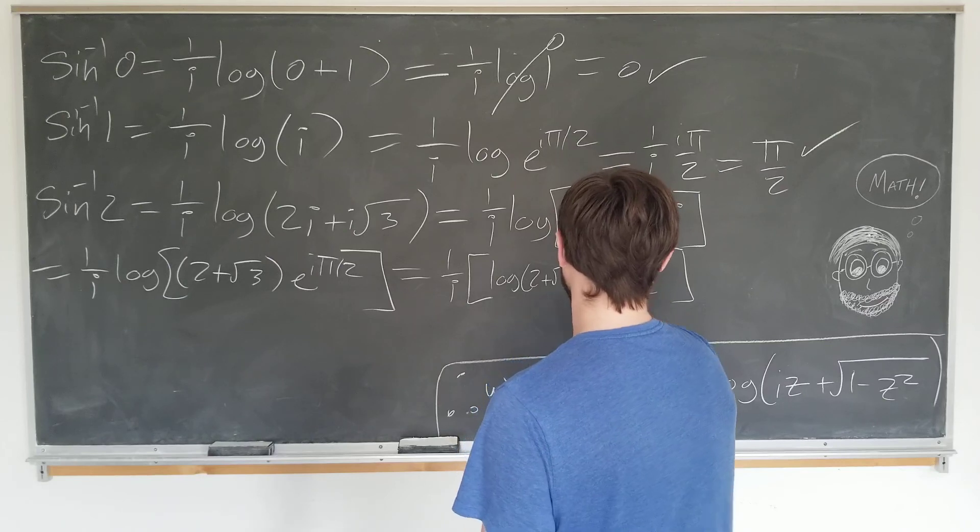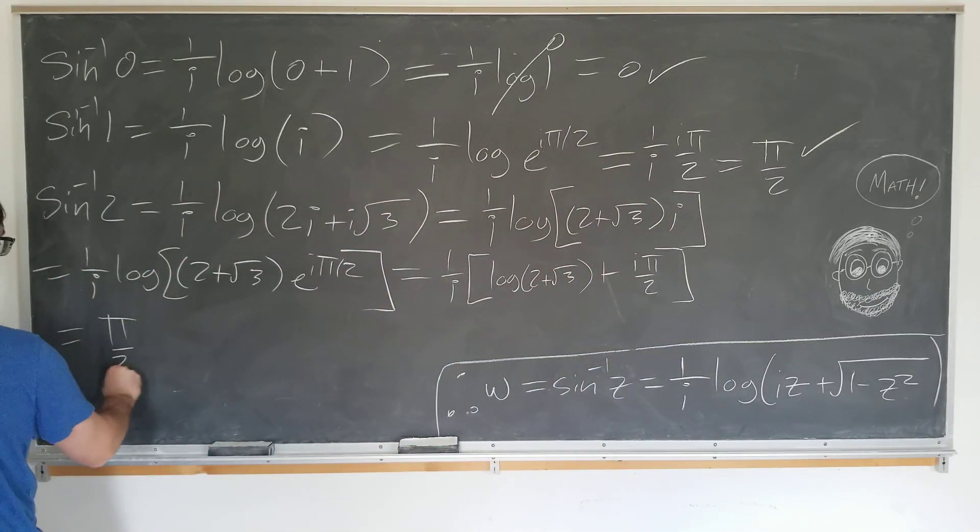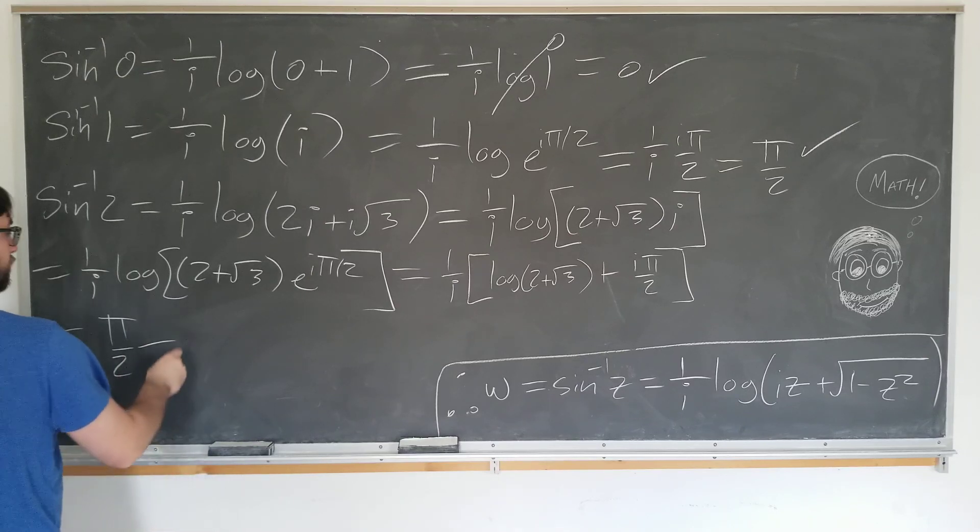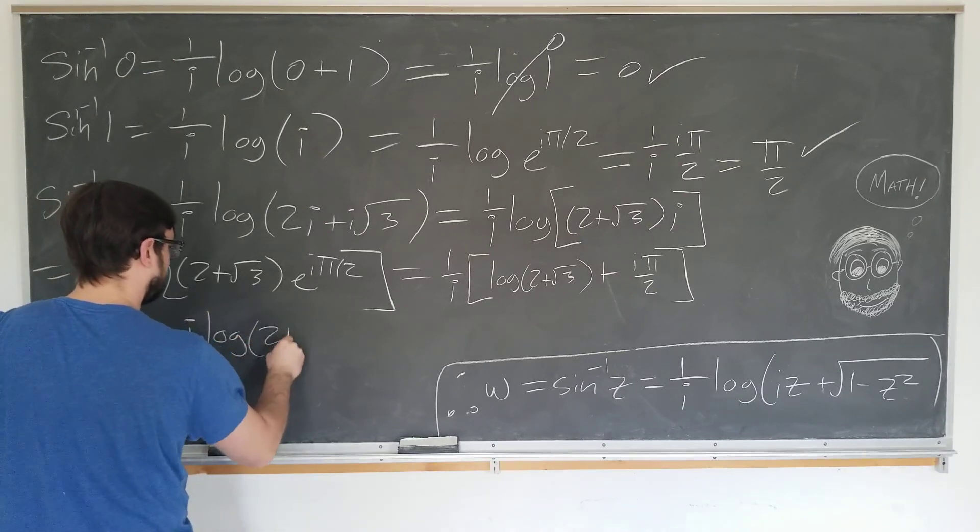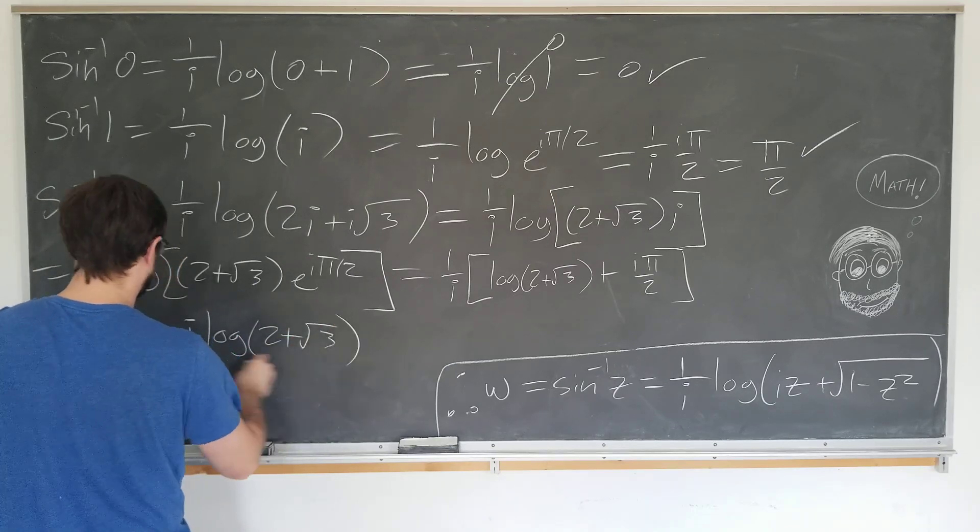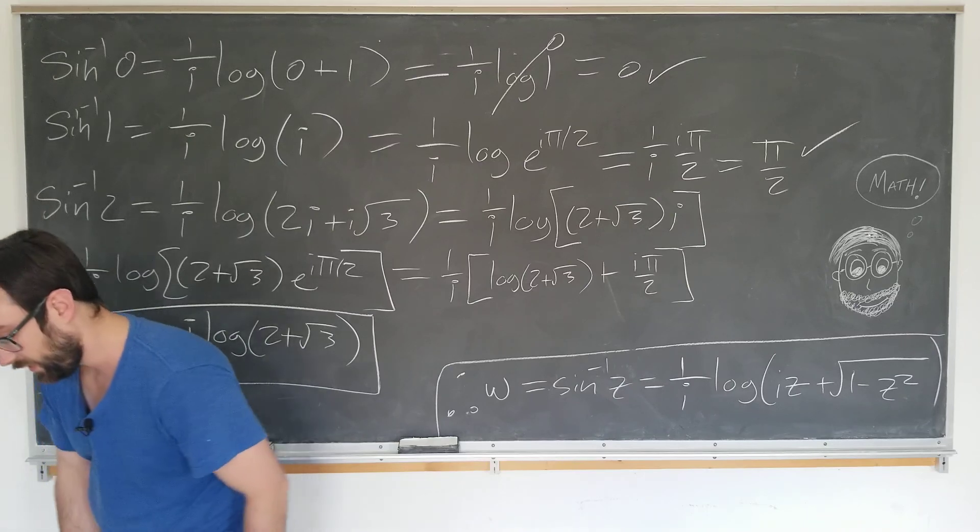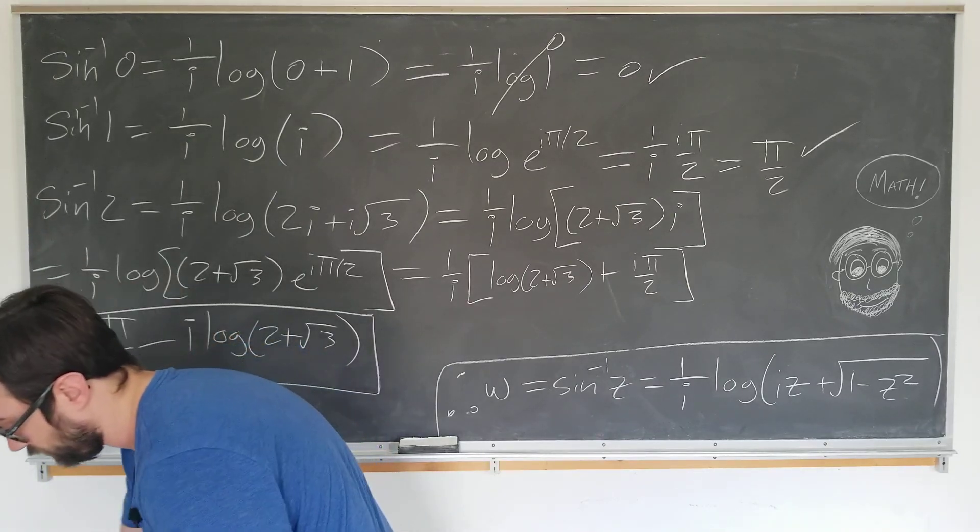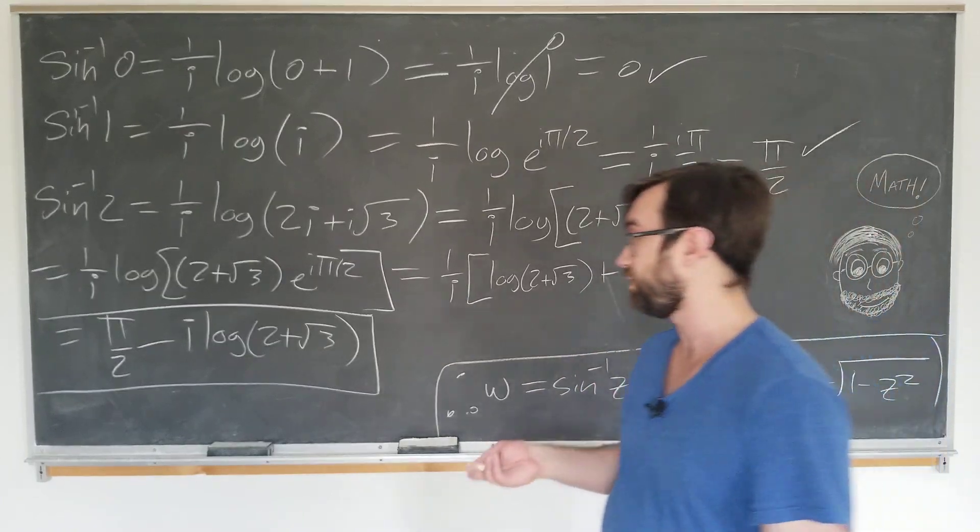We have log of 2 plus the square root of 3 plus i pi over 2, which we can now notice that these i's go away, giving us pi over 2. And we have minus i log of 2 plus the square root of 3, which is not that nice, kind of messy. But this is the answer. This is a complex value, just like we hoped.